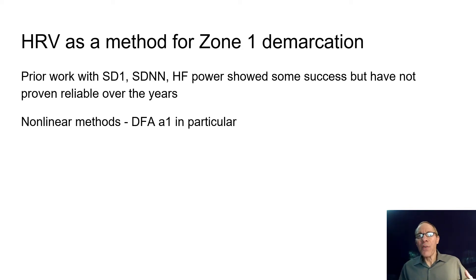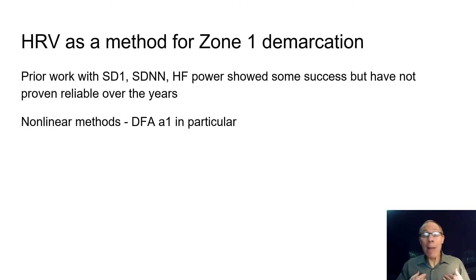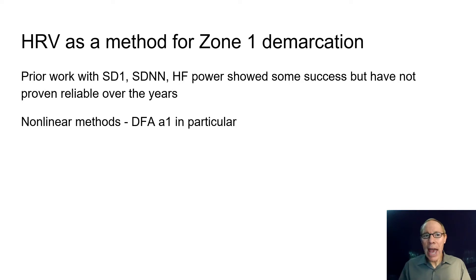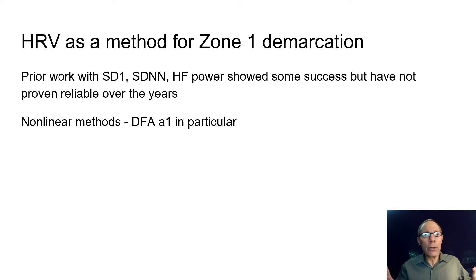Heart rate variability methods for determining zone one go way back — perhaps 20 years. There has been prior work using SD1, SDNN, and high frequency power. Initial studies using these methods met with some success but over the years have not proven reliable. My own personal experience getting into this field revolved around looking at one of my VO2 max ramps in Kubios and plotting all the different parameters — SD1 didn't work, SDNN didn't work, high frequency power didn't work. None of them showed where my first ventilatory or first lactate threshold were — totally no correlation.